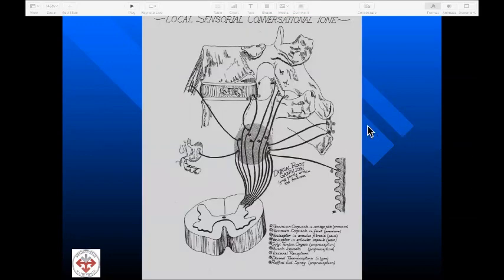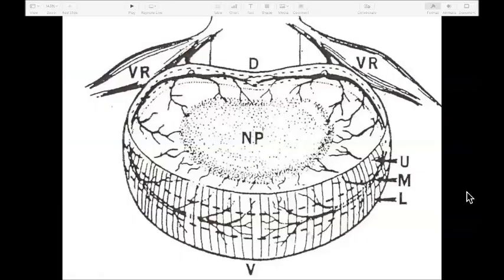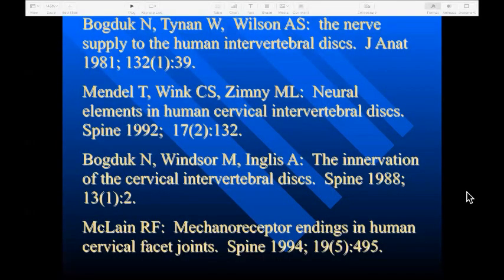We have very sophisticated neural receptors in the posterior joints — some rapidly adapting, some slow adapting — as well as receptors in the ligaments and muscles of the spine. Along with information from viscera, cutaneous receptors, and special sense organs, these give the body information about what's happening. In the disc, the outer annulus has nociceptive fibers. Today it's well accepted that a disc can be a pain generator, as there is a nerve supply to human intervertebral discs. Neural elements have been identified in both cervical and lumbar discs, and mechanoreceptor endings have been found in human cervical facet joints.